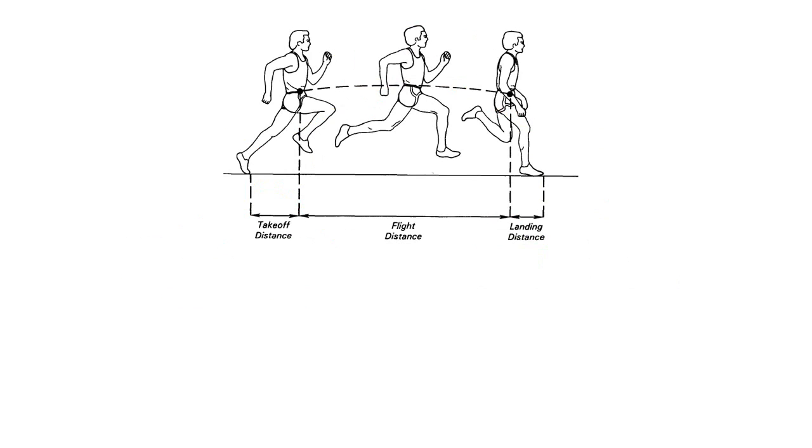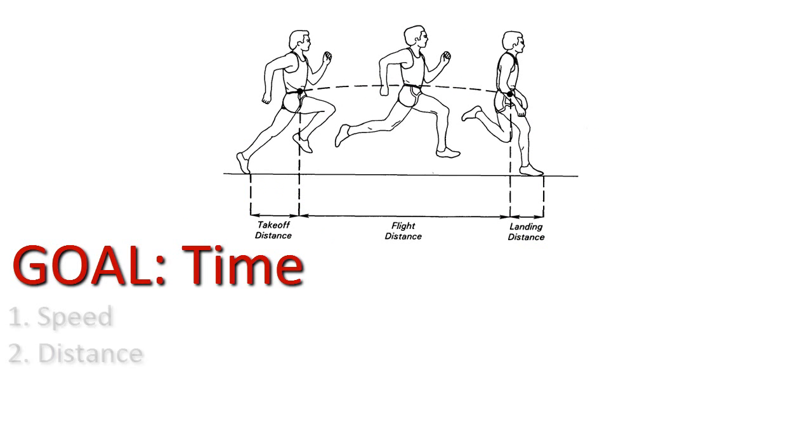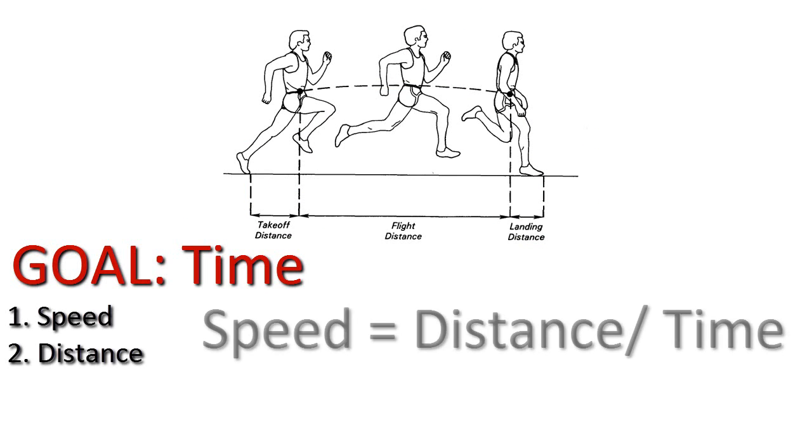For example, let's consider the 100m sprint. The most important result for the 100m sprint is time. The two most basic and relevant factors that pertain to time are speed and distance, and they're related by the equation speed equals change in distance divided by change in time.